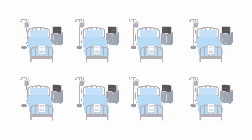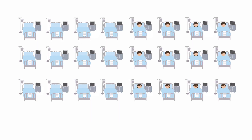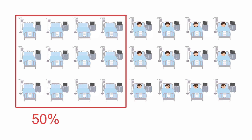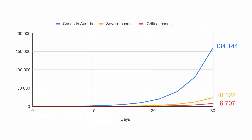But obviously these beds are not all empty — there are patients in them. So if we assumed, and that's already a pretty high assumption, that we could free up 50% of these beds for COVID-19 patients, then we would have 1,000 beds available. If we assume a doubling interval of three days, then in 21 days we would reach 1,000 critically ill COVID-19 patients. This means that in 21 days, this capacity of 1,000 free beds — 50% of the entire ICU capacity — would be reached. After this time, there will be no space for critically ill patients with COVID-19.